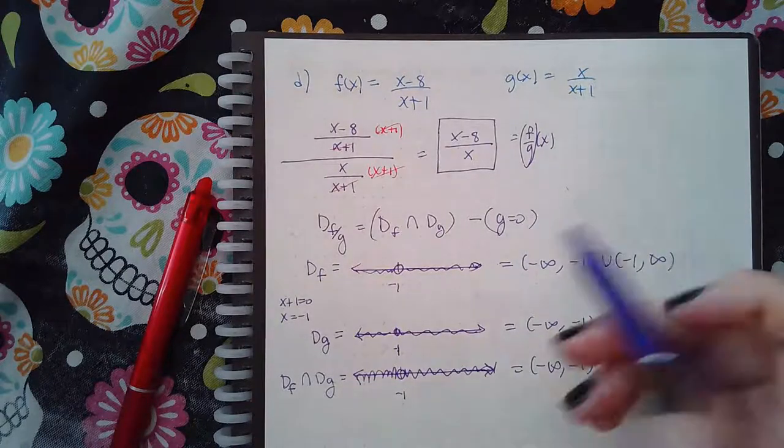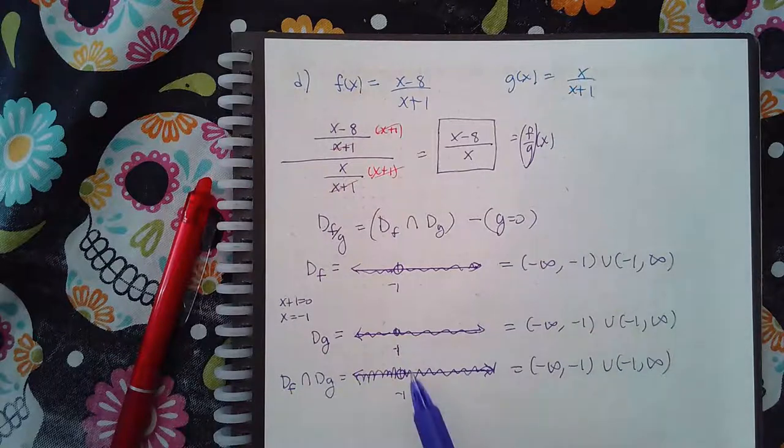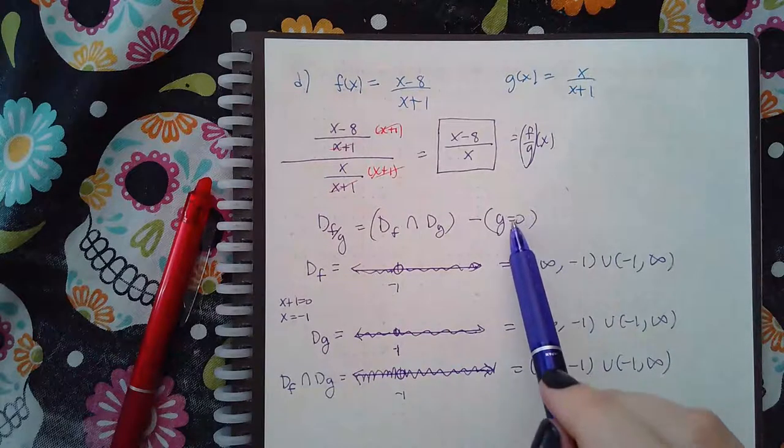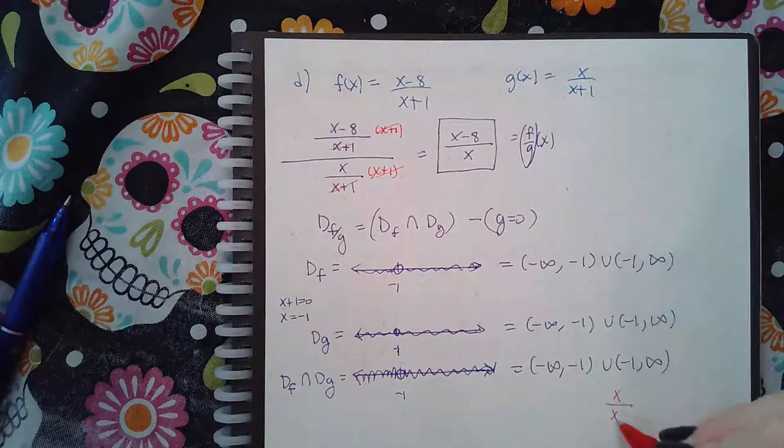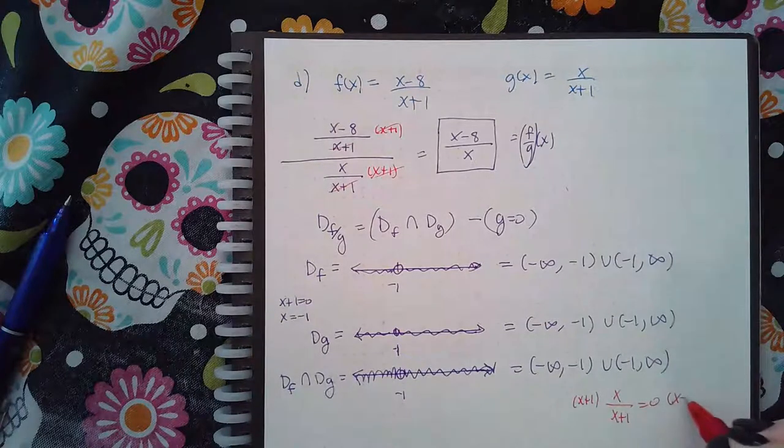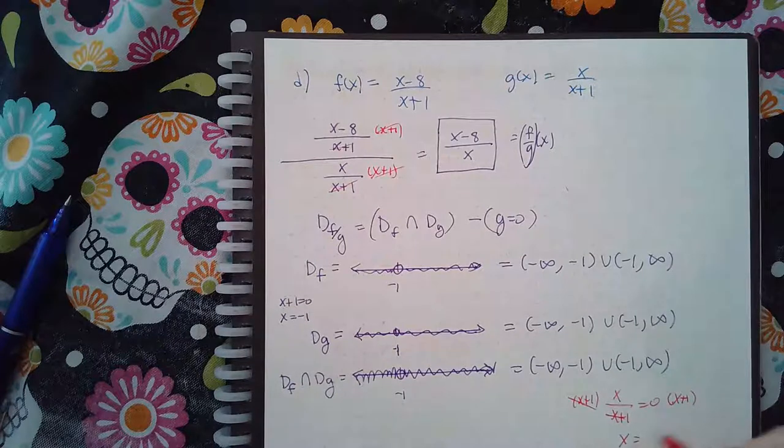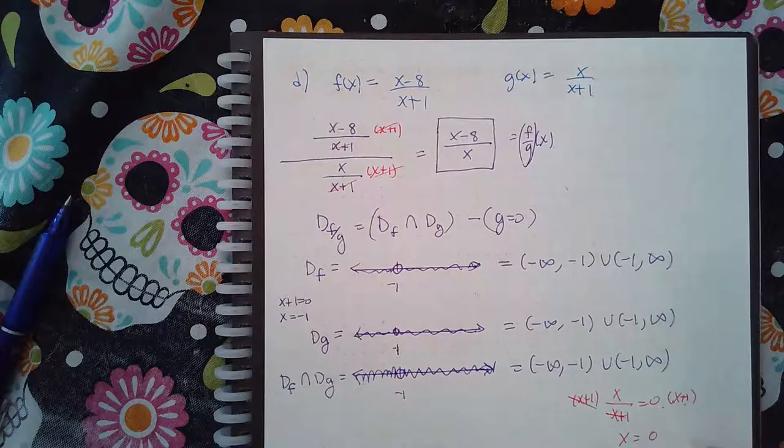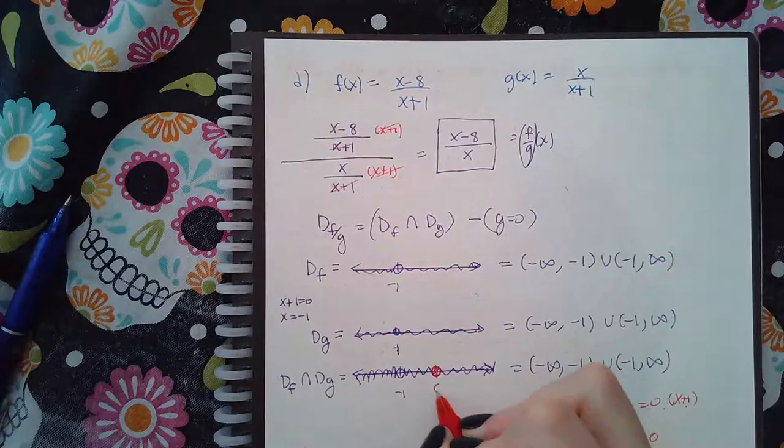Now, in order to find the domain of f over g, I have to remove from this interval where g equals 0. So where does g equal 0? If I multiply both sides by x, the common denominator, I get x equals, and 0 times anything is 0. So over here, I have to remove the value 0.